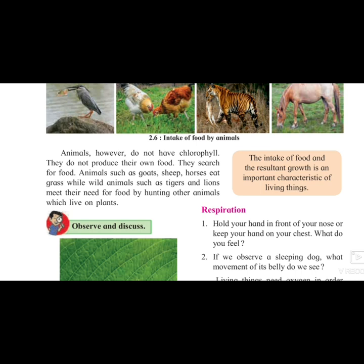We have seen how plants produce their food. What things are required to produce the food? They require water and they require sunlight. The food is produced in leaves with the help of chlorophyll which is present. The process of producing food in leaves is called photosynthesis.